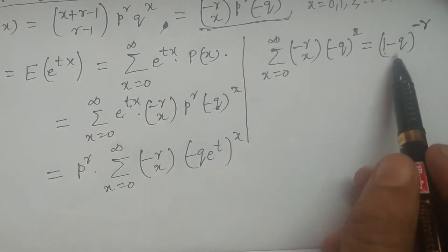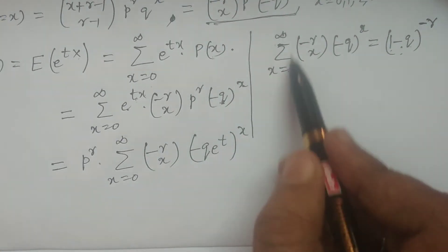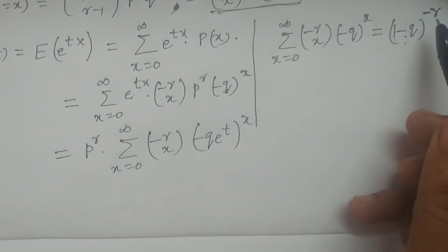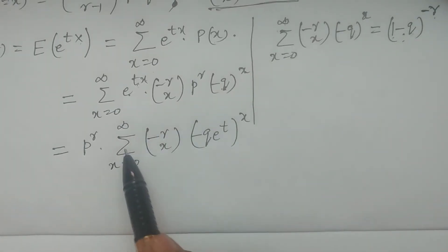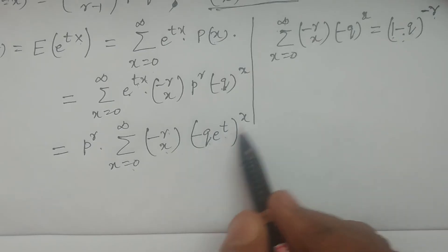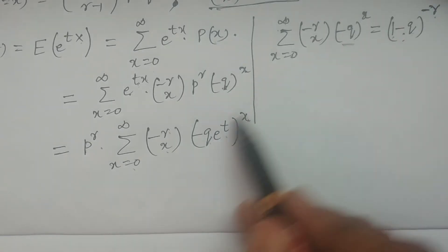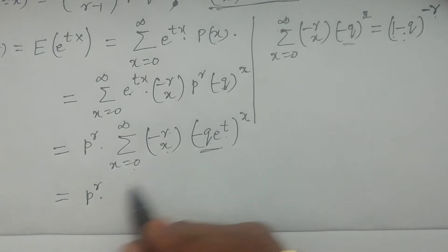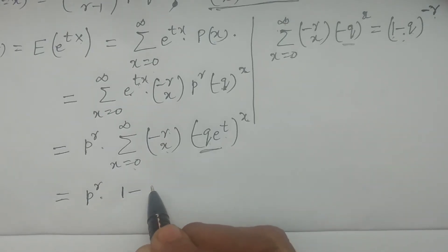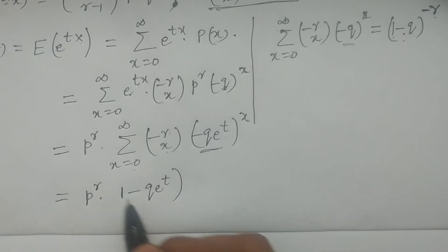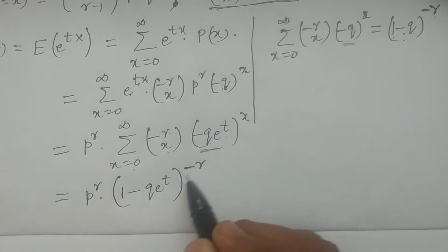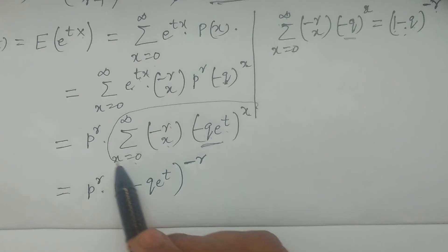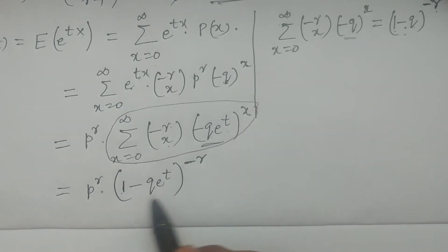Using the negative binomial expansion formula, the summation from x equals 0 to infinity of (−r C x)(−q e to the power t) to the power x equals (1 − q e to the power t) to the power (−r). So the MGF becomes p to the power r times (1 − q e to the power t) to the power (−r), which can be written as (1 − q e to the power t) to the power (−r).